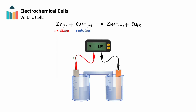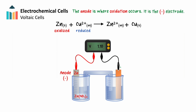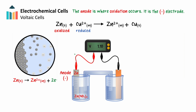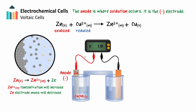When we set up our voltaic cell for this reaction, we have one half-cell containing a zinc electrode immersed in a solution containing a dissolved zinc salt — for this example, a solution of zinc nitrate. We call the zinc electrode the anode, as it's the site where oxidation occurs. Oxidation will always occur at the anode. Since the anode in a voltaic cell is the source of electrons, it is identified as the negative electrode. The half-equation for the oxidation of zinc shows the oxidized zinc losing two electrons to form the Zn²⁺ ion. As the reaction takes place, the concentration of Zn²⁺ ions in solution will increase, and the mass of the zinc anode will decrease.